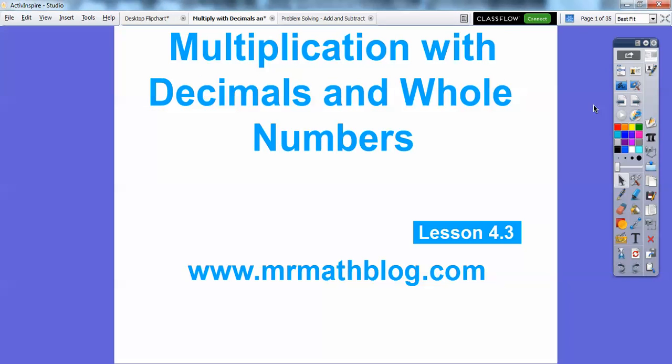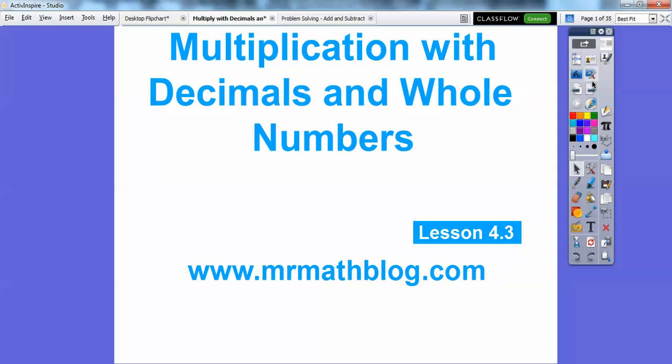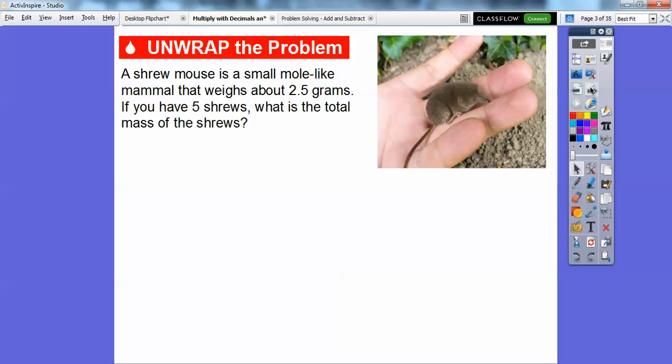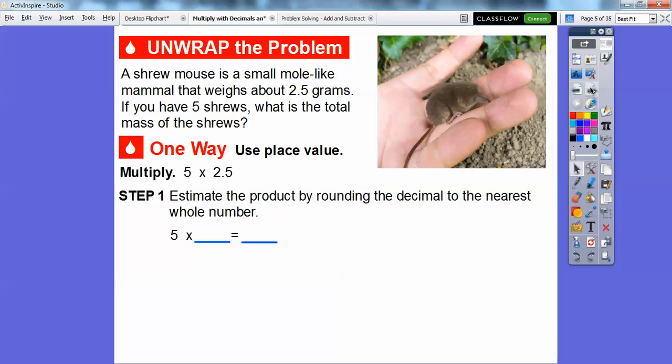Here's our common core strand. And our question is, how can we use drawings and place values to multiply a decimal with a whole number? We have a shrewmouse. I didn't know what a shrewmouse was. But it's a small mole-like mammal that weighs about 2.5 grams. So if we had 5 shrews, about what would the total mass be? So we're going to use place value here to multiply 5 times 2.5.